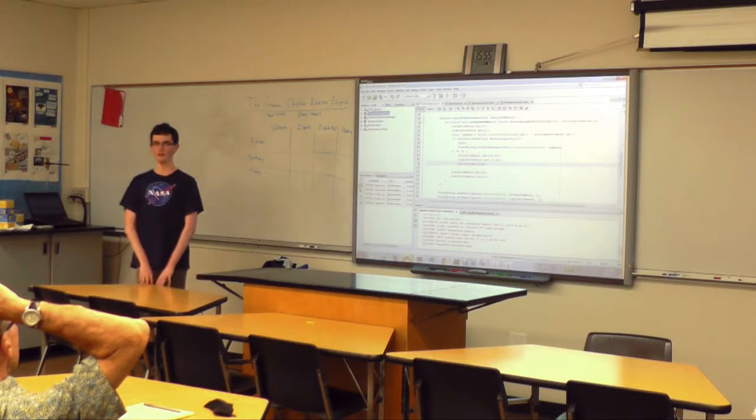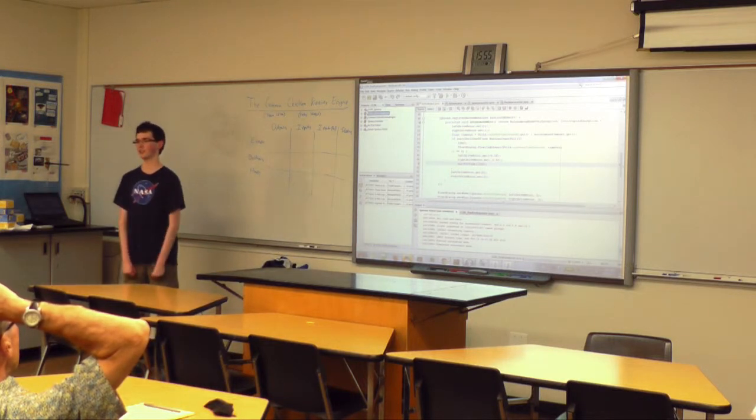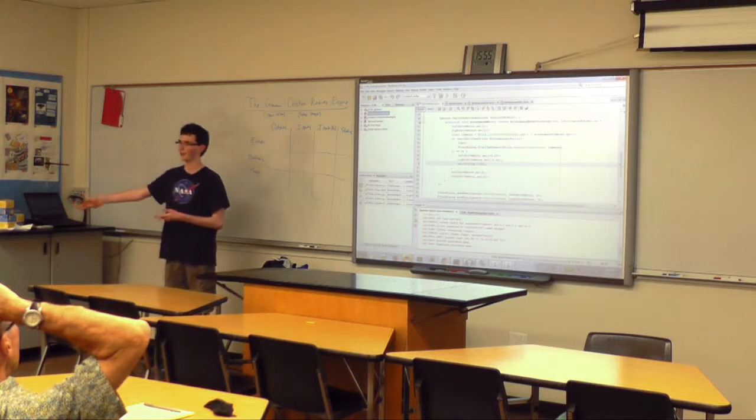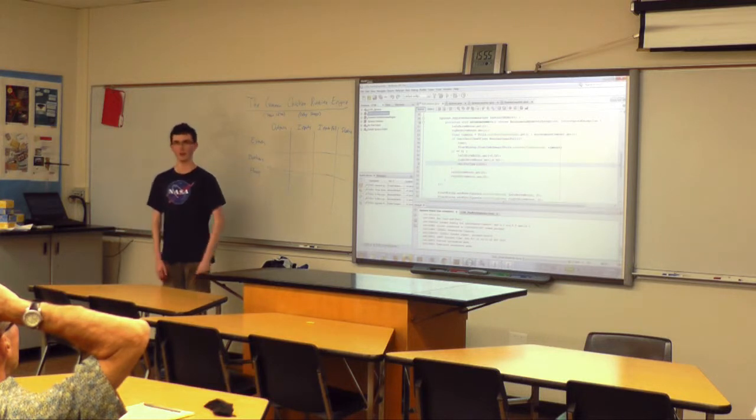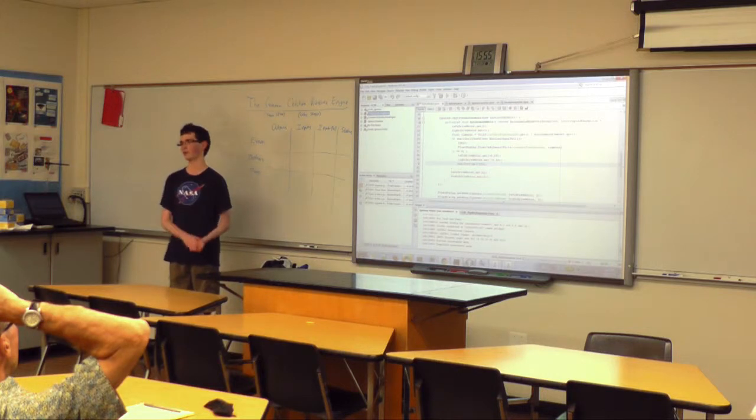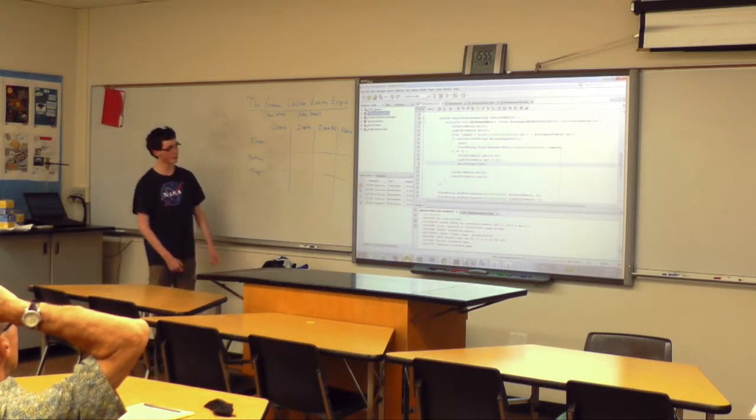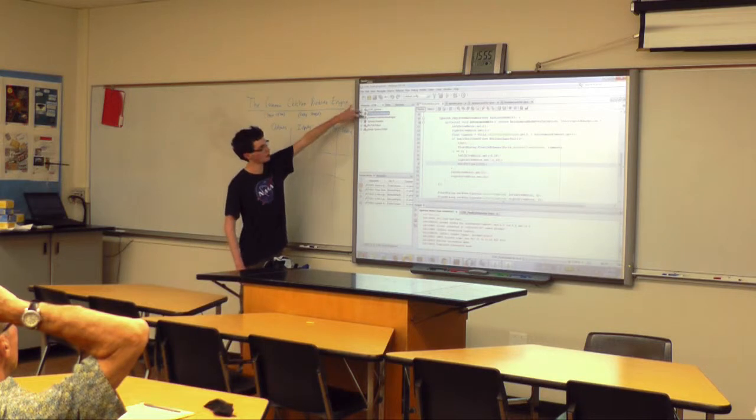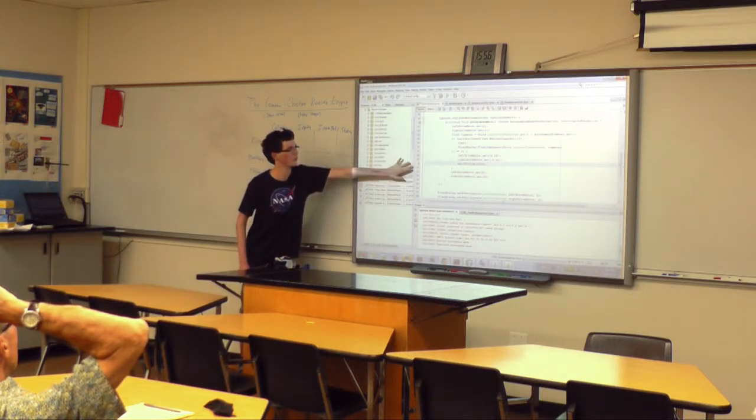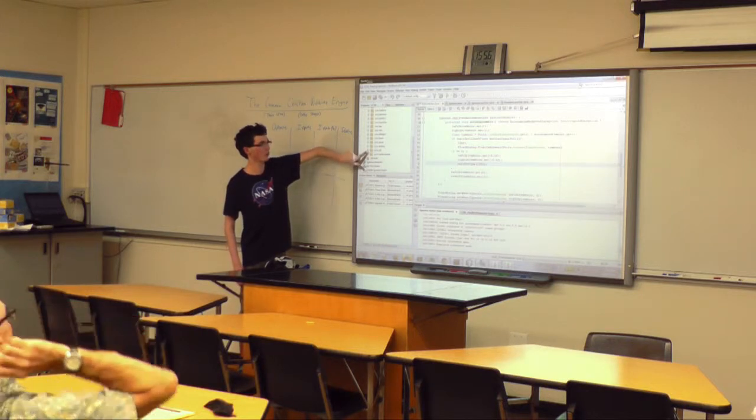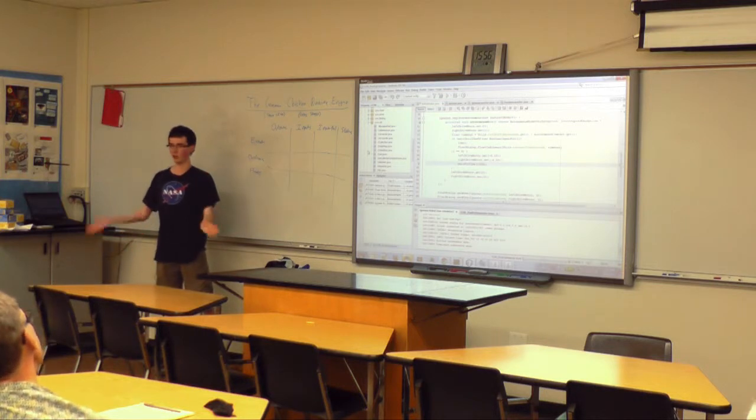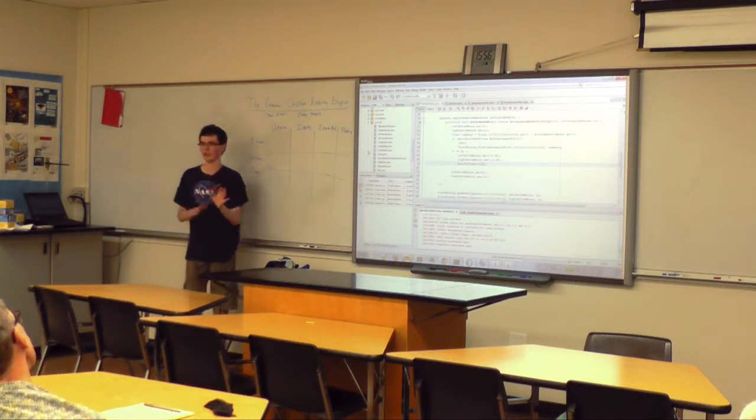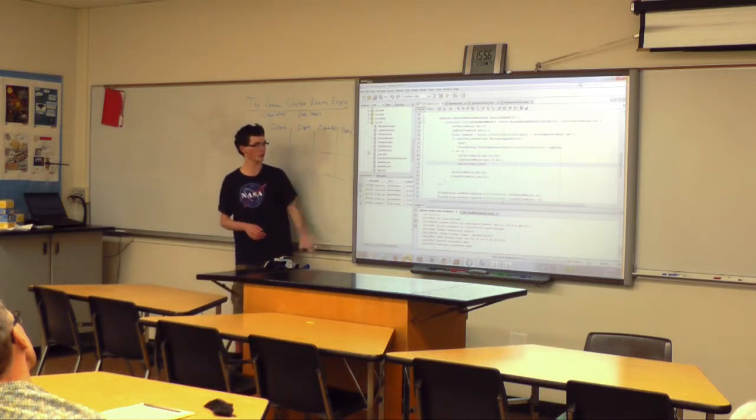Under normal Java, you have a bunch of collection systems. You can have a list, an array, an array list or linked list, a hash map. On the robot, under Java, you can't have those because it's Java 1.3, not 1.5 or 6 or 7. So CCRE actually contains its own implementation of all of that. You can use collections both on the robot and on your computer. You don't need to worry about the robot having really old stuff that doesn't work well.